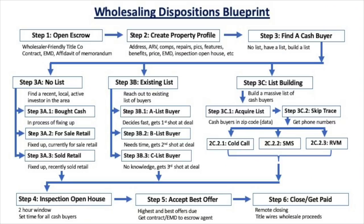That means you technically have 30 days to find a cash buyer, assign your contract to that cash buyer, and have that cash buyer ready to purchase the property. However, my goal is to find a cash buyer within 10 days. Honestly, if I can't find a buyer in 10 days, I probably don't have a deal. So taking a look at my blueprint, let's start with step one.